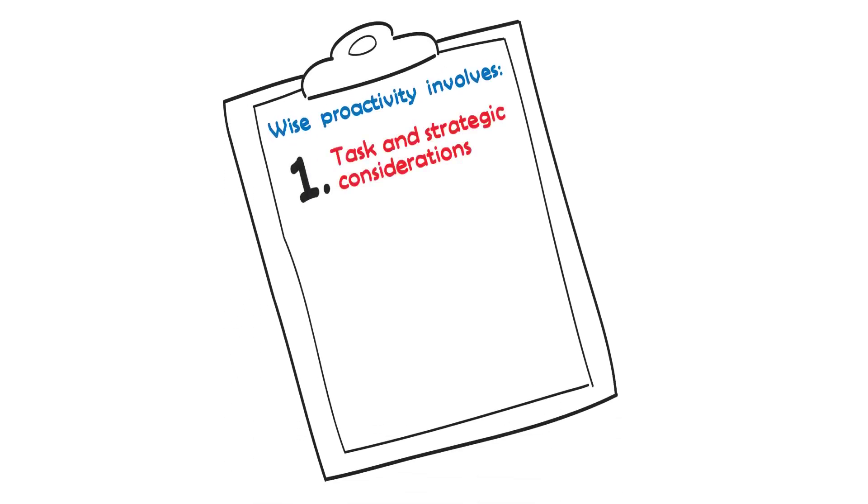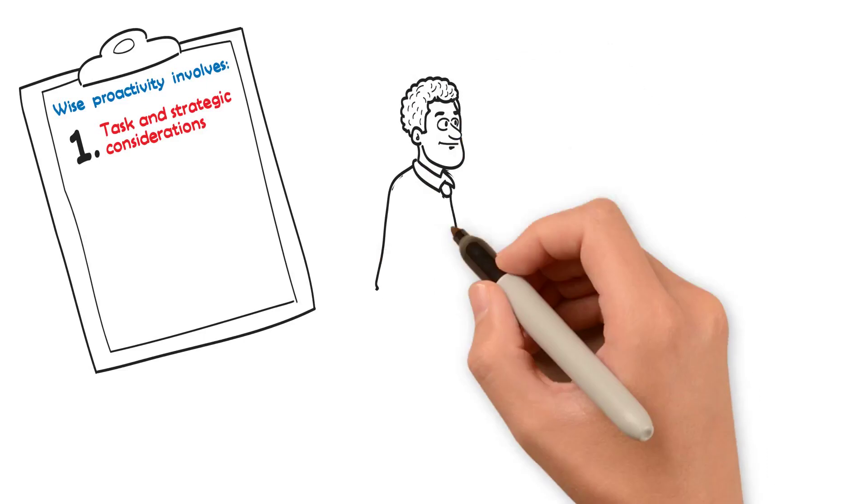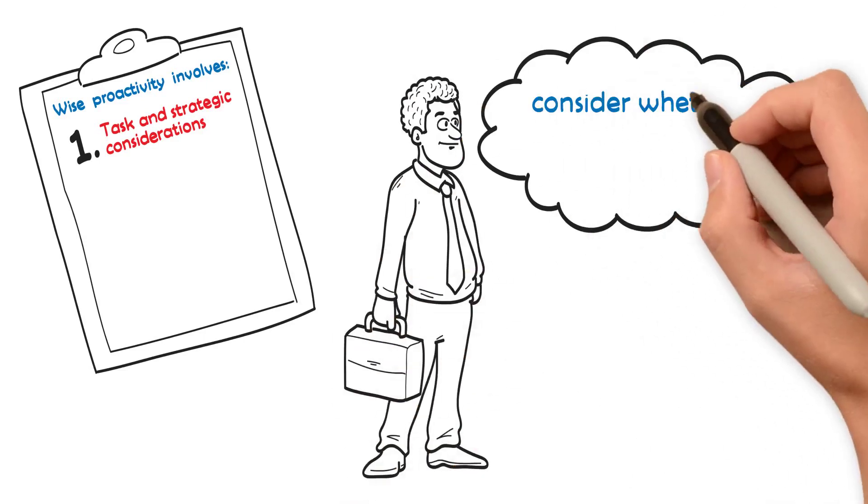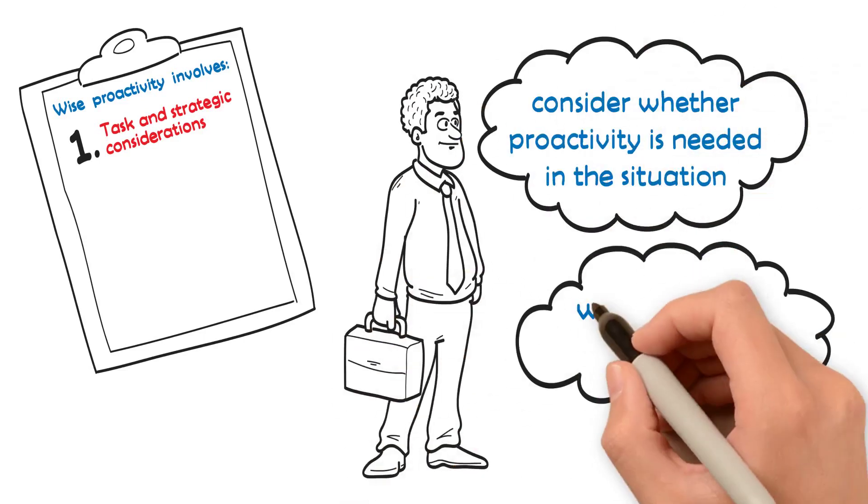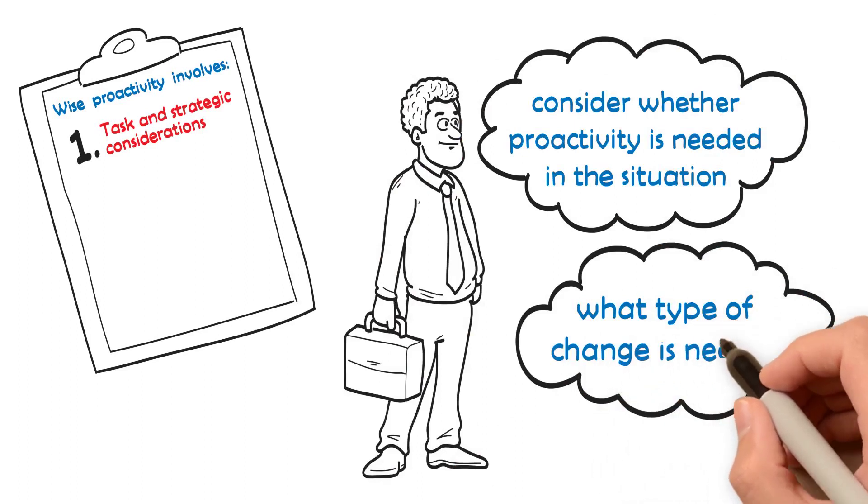First, wise proactivity involves considering task and strategy of the organization. Employees need to consider whether proactivity is needed in the situation, and if it is, what type of change is needed.